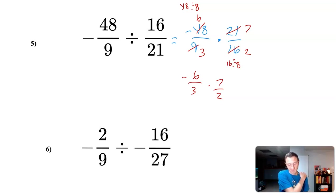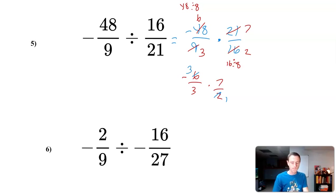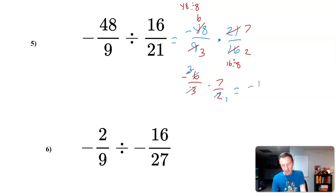From dividing 48 and 16 by 8, we got six and two — but two also goes into six, so we could have divided by 16 originally. Divide by two now: two divided by two is one, six divided by two is three. Then I notice I have a positive three and a three on that same fraction — three over three is one. So we have negative one over one times seven over one, which gives negative seven.